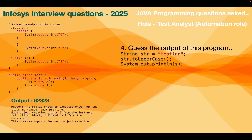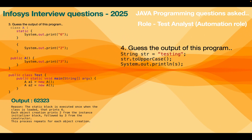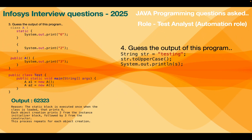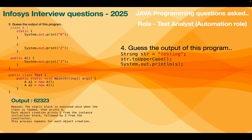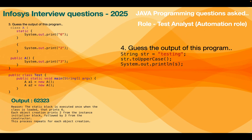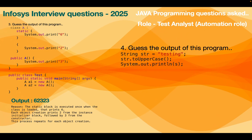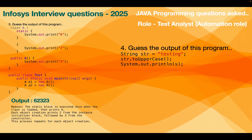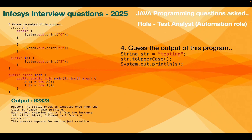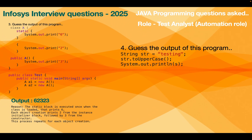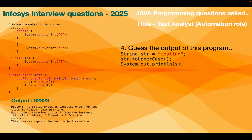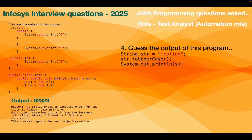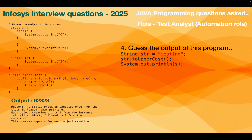In the next program, there is a static block of code and a method called 'a'. Whenever a static block of code is present, that block executes first, so 6 is printed first. Then object creation prints 2 from the instance block of code. Finally the constructor block prints 3. Since there are two object creations, the sequence '2, 3' is repeated two times. So the output is: 6, 2, 3, 2, 3.